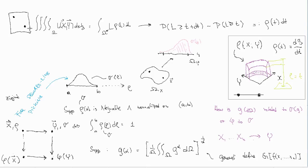Let us begin with this motivational example. You have a square and two points in it. The square is of unit length — this side is one, this side is one, all sides are equal to one. The question is: what is the expected length, or expected distance, between two randomly chosen points in this square?